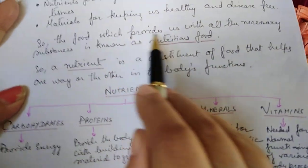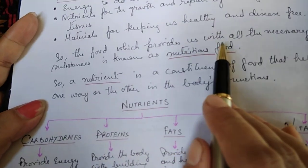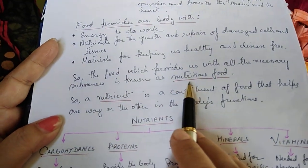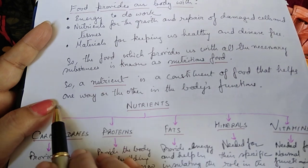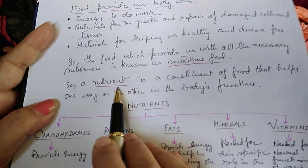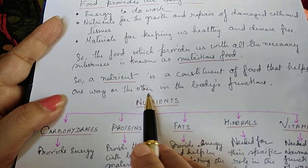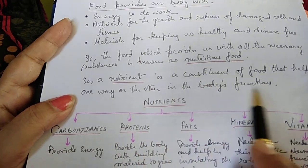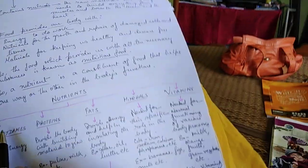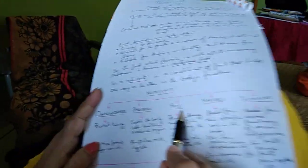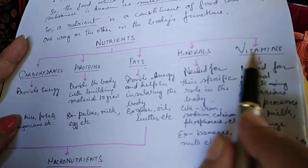The food which provides us with all the necessary substances is known as nutritious food. A nutrient is a constituent of food that helps in one way or another in the body's functions. Nutrients are of five types: carbohydrates, proteins, fats, minerals, and vitamins.